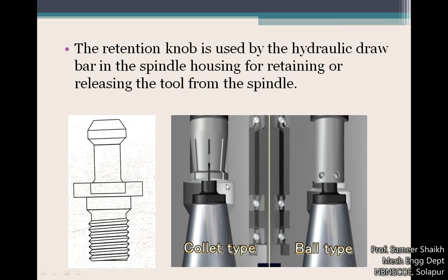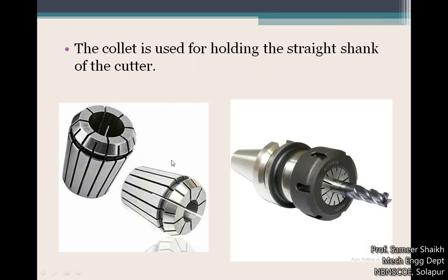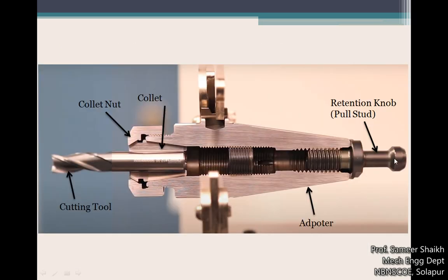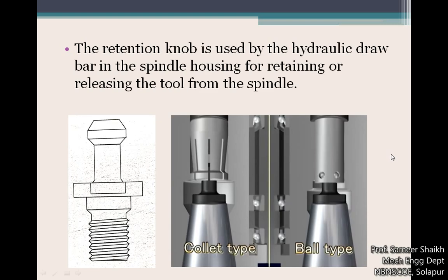There are two types of arrangements for retaining and releasing the cutting tool: a collet type and a ball type arrangement, which works like a gas cylinder and regulator. The retention knob goes inside the spindle taper, and we need to retain or release the cutting tool assembly using this knob.